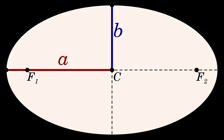In an ellipse, the semi-major axis is the geometric mean of the distance from the center to either focus and the distance from the center to either directrix. The semi-minor axis of an ellipse runs from the center of the ellipse to a point halfway between and on the line running between the foci to the edge of the ellipse. The semi-minor axis is half of the minor axis.